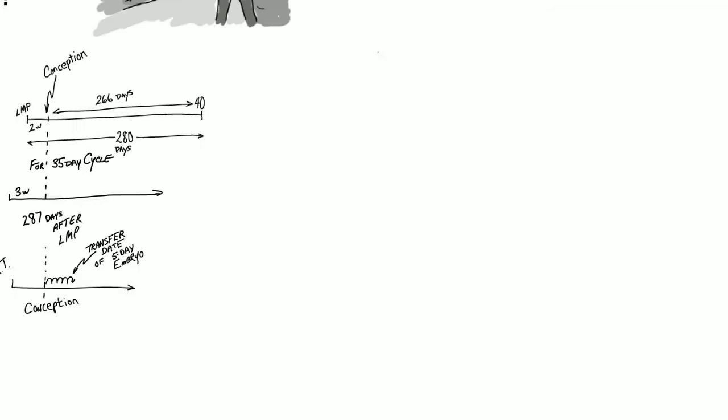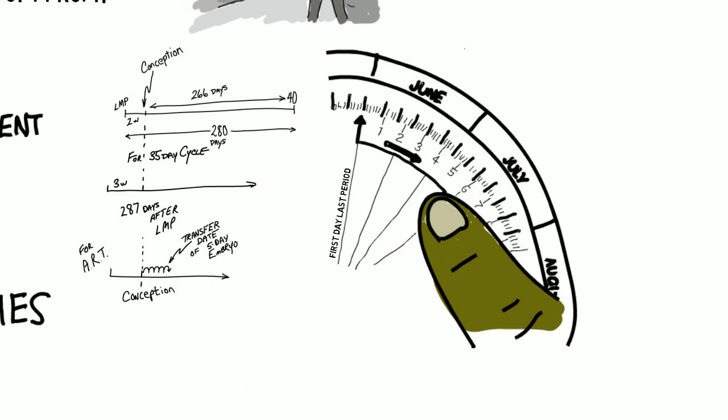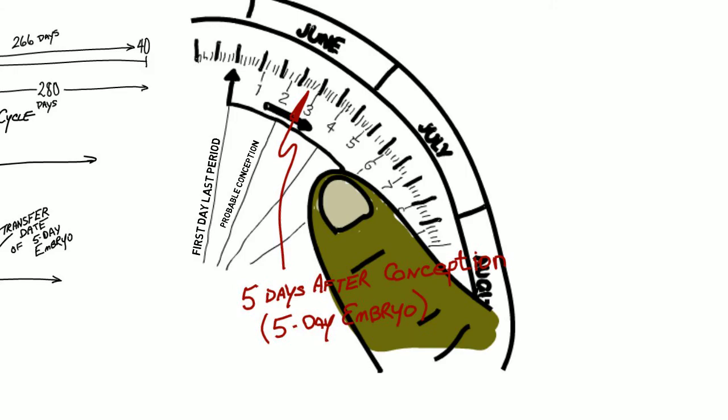If the pregnancy resulted from assisted reproductive technology, use that information. Transfer of a day 5 embryo implies that conception occurs 5 days before the transfer date when you are using your wheel.